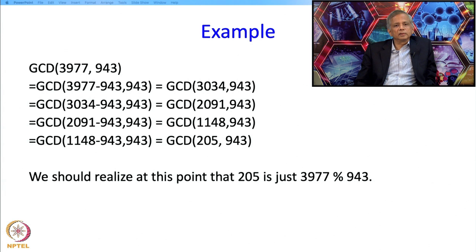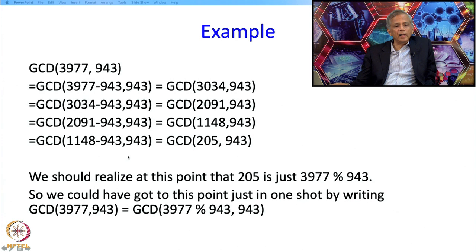Now if you think about this, you will realize that 205 is just 3977 mod 943. So we did not have to go through subtracting 943 one at a time, we could have just subtracted as many times in one shot and just taken the remainder. So that is exactly what we should do instead of going through these several steps.